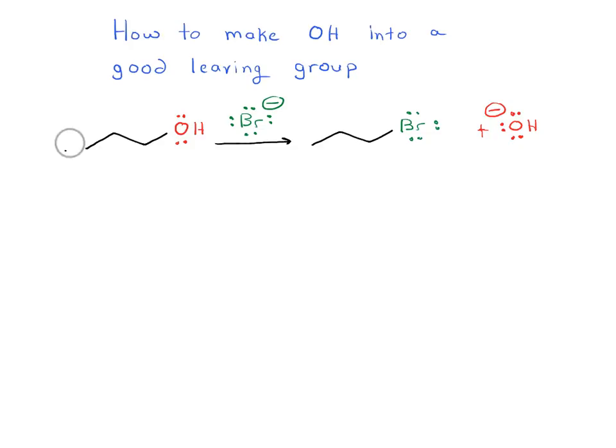Good leaving groups are weak bases and that's why under normal conditions this type of substitution reaction which I've drawn here between an alcohol and a halide actually not a reaction that will work. This reaction does not work. Why does it not work? Well because we're displacing the hydroxide ion and this is a strong base and therefore it's a poor leaving group.